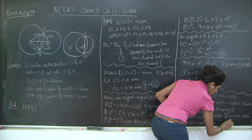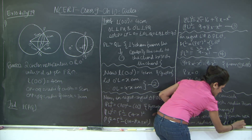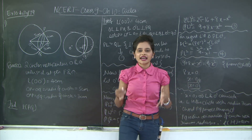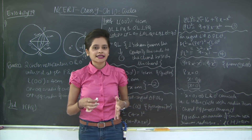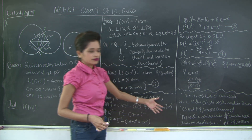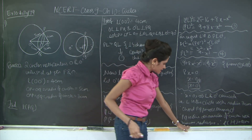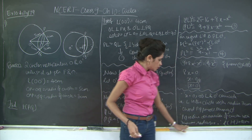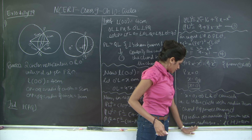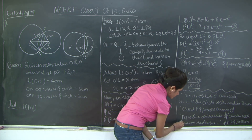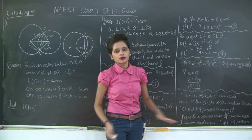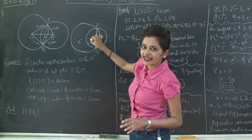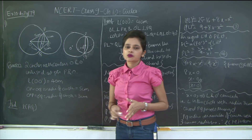Therefore, the length of PQ is equal to 6 centimeters, because the diameter of the circle is twice its radius. Since PQ is the diameter of the circle with radius 3 centimeters, length of PQ is 6 centimeters. The catch here is that L and O' coincide. So this was the first question.